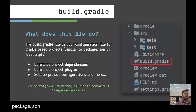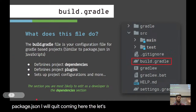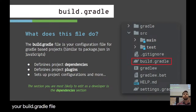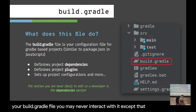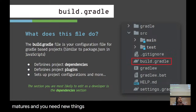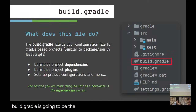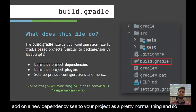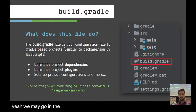The build.gradle — if you remember the package.json when we were using JavaScript with npm — that file handled things like installing dependencies. It had little scripts we could run like 'npm run start.' So the build.gradle is like the Java equivalent of the package.json.